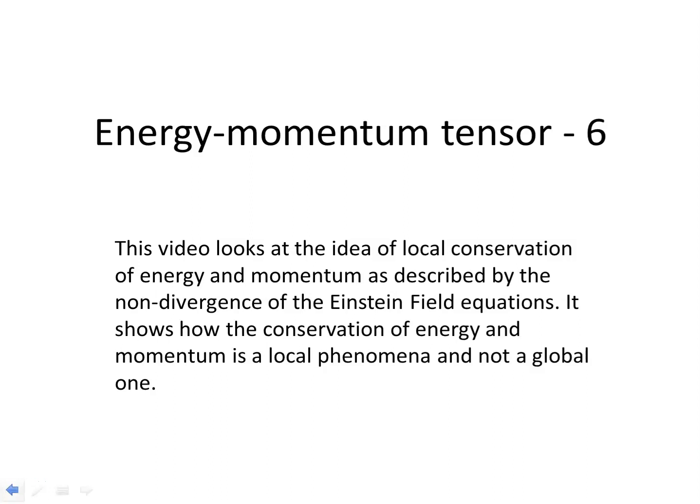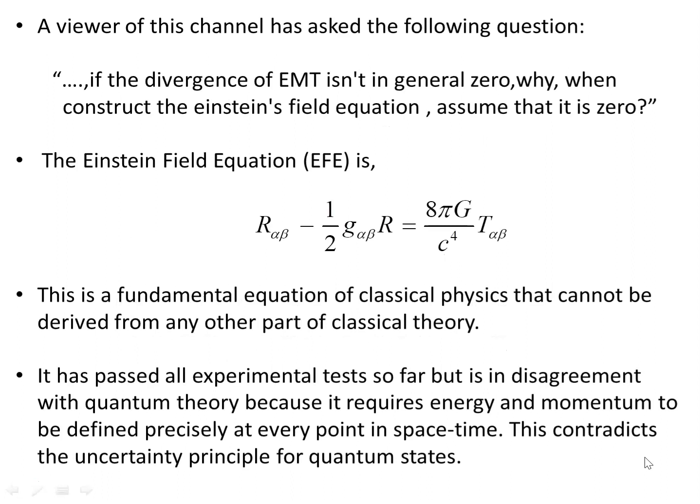This video looks at the idea of local conservation of energy and momentum as described by the non-divergence of the Einstein field equations. It shows how conservation of energy and momentum is a local phenomenon and not a global one. A viewer of this channel asked the following question: if the divergence of the energy-momentum tensor isn't in general zero, why, when constructing Einstein's field equations, do we assume that it is zero?